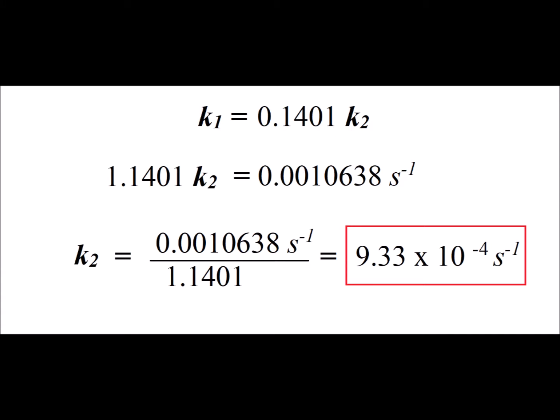We can use the equilibrium constant to get a relationship between k1 and k2. k1 is equal to 0.1401 times k2. Then we substitute that value for k1 into our expression k1 plus k2 equals 1 over 940 seconds. So that gives us that 1.1401 k2 is equal to 0.0010638 inverse seconds.